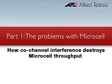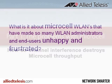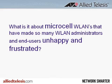In this video I'm going to talk about how co-channel interference destroys microcell throughput. It's the first of a series of videos that answers the question: what is it about microcell wireless LANs that have made so many wireless LAN administrators and end users unhappy and frustrated? It's an important question because microcell, even though it's a first generation wireless LAN architecture, is still used by most of the leading enterprise wireless LAN vendors today. We at ExtraCom know this because we hear about microcell issues all the time from customers who have switched over to our architecture.